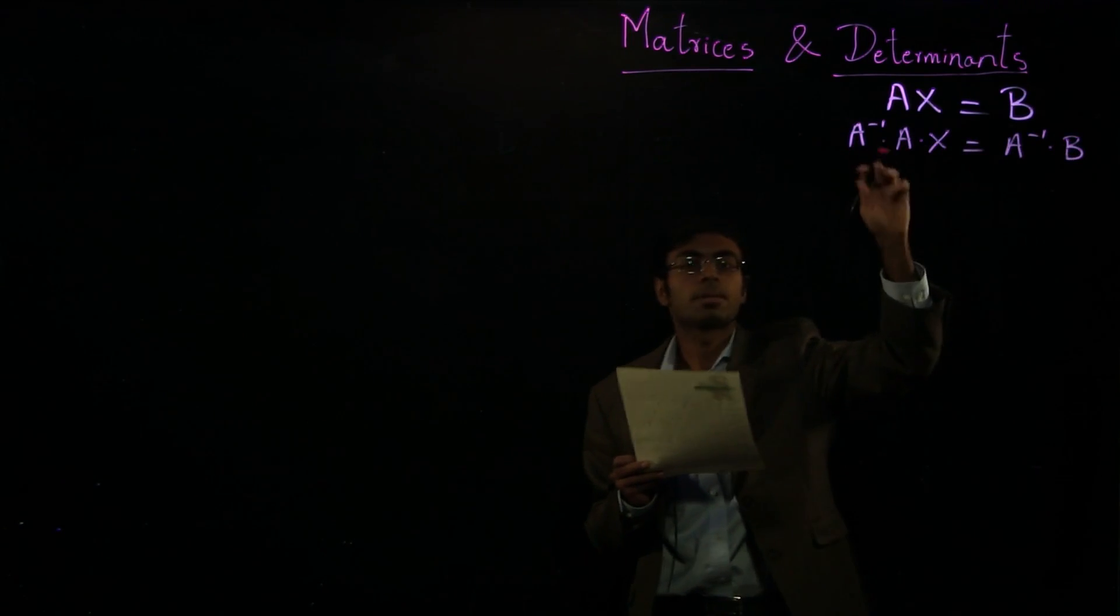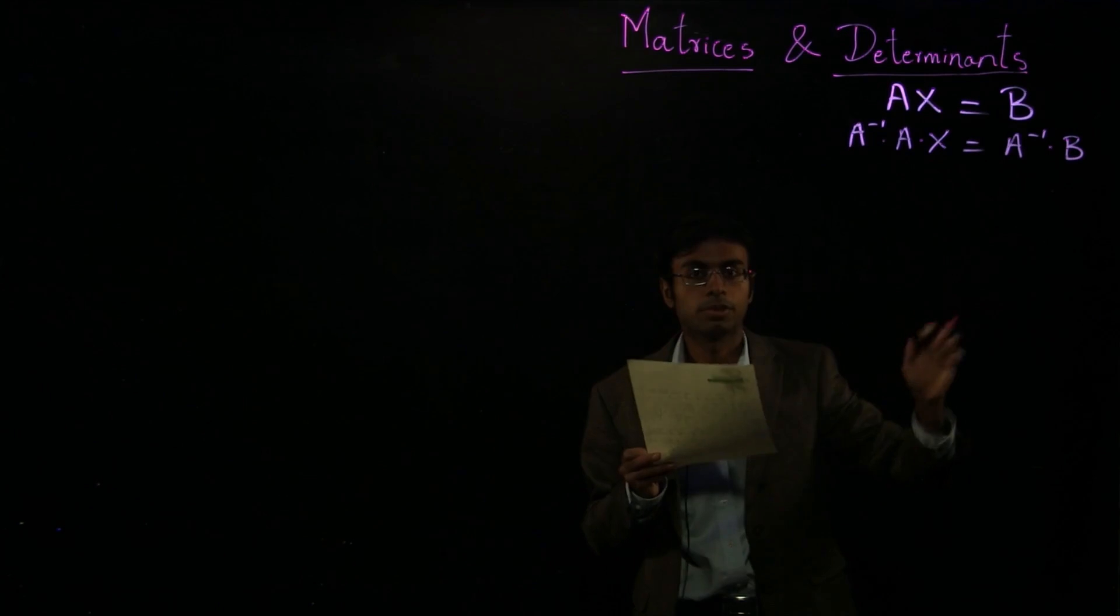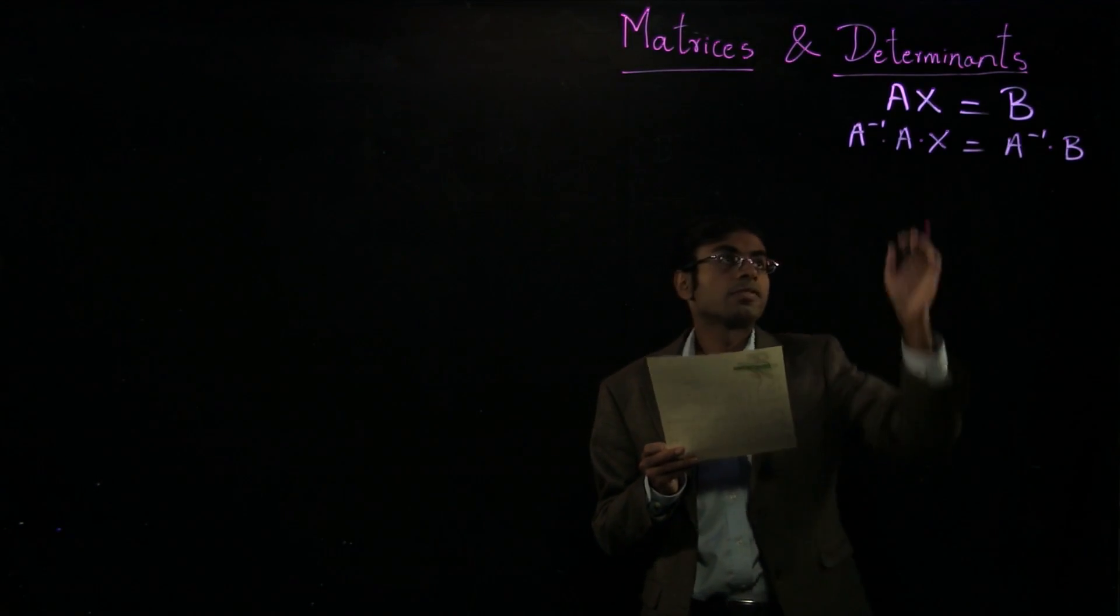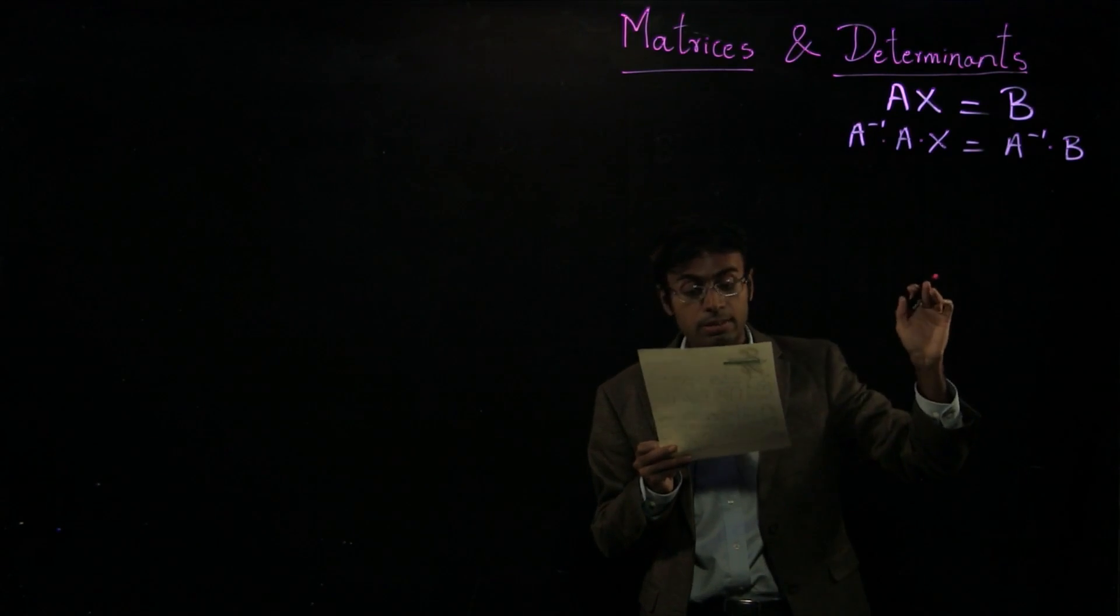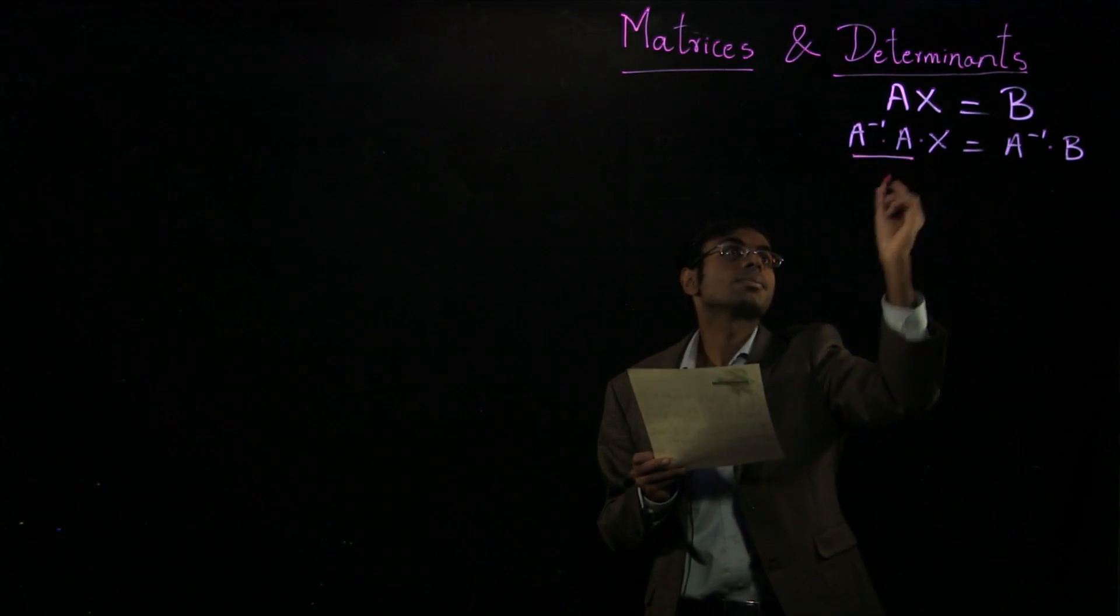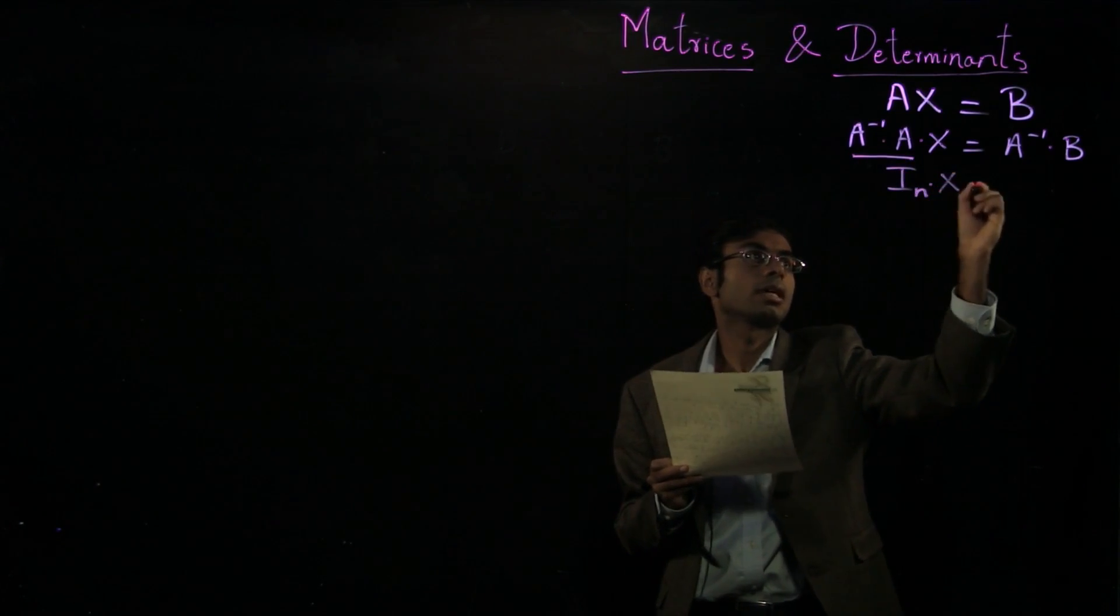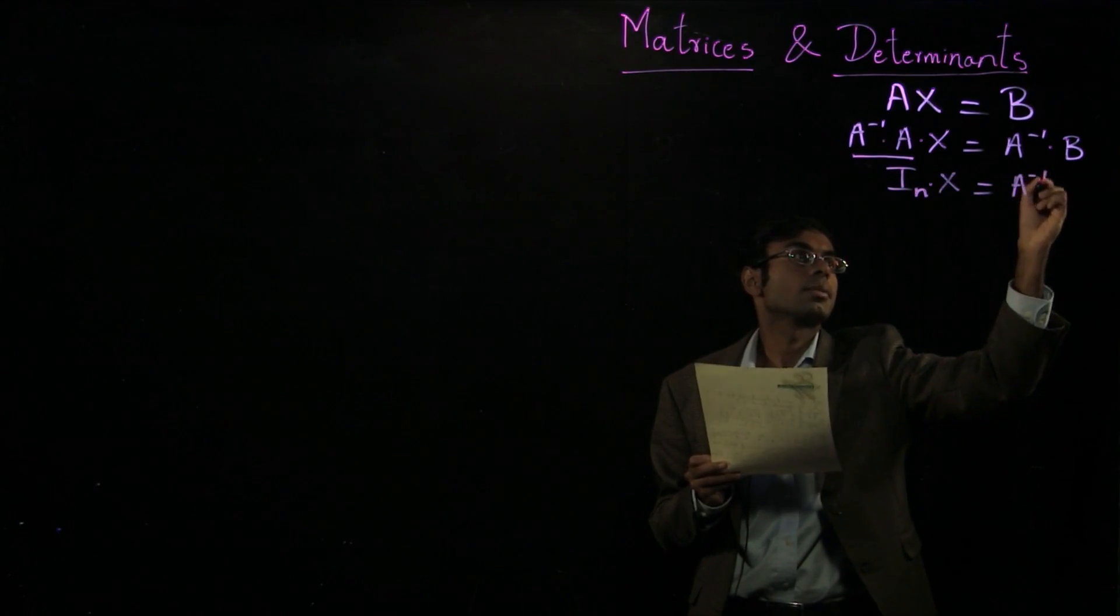You have to do the operation on both sides of the equation to keep the relation the same. And provided A inverse exists, then you will recognize this part, A inverse times A, as the identity matrix of order n equals A inverse times b.